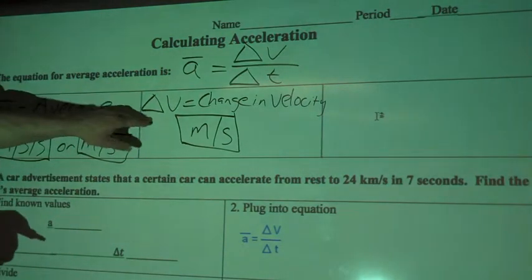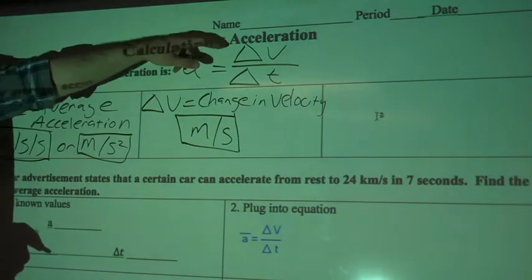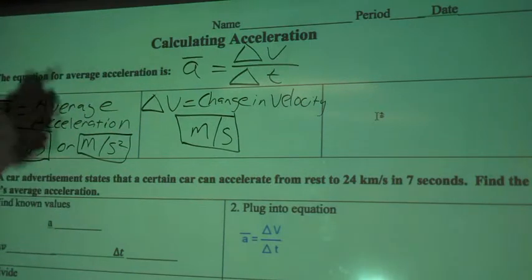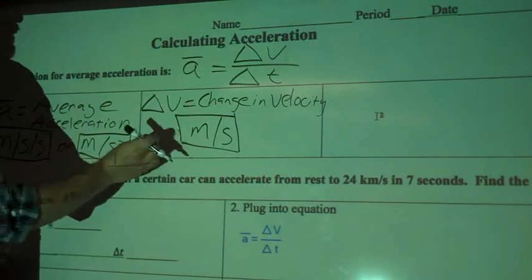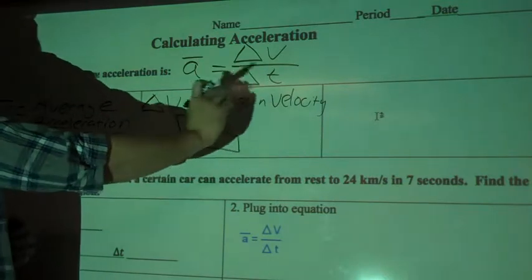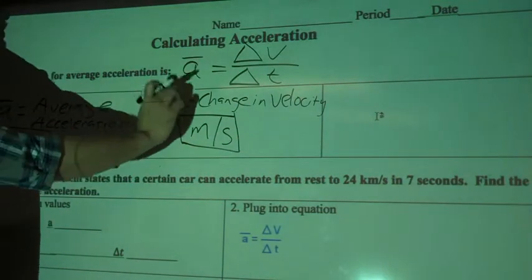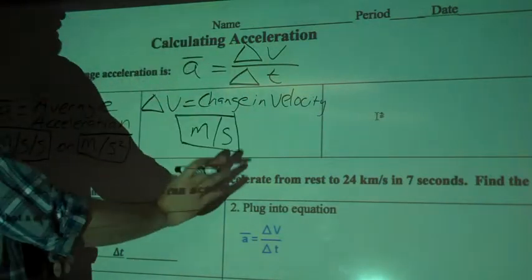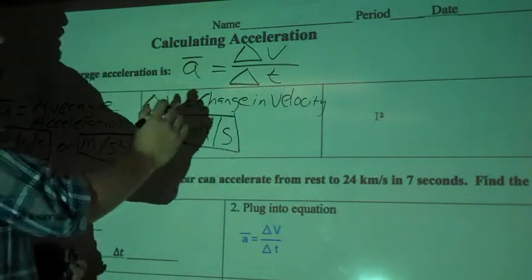And we'll be looking for the difference between maybe what it started at, what it ended at, or where it ended and where it started, whatever we're looking for, or maybe between two points in the middle of a race or something. We'll be finding the change there, so that might involve subtraction, or it might be more obvious, it may just tell us it went from zero to eight.